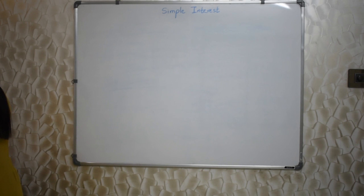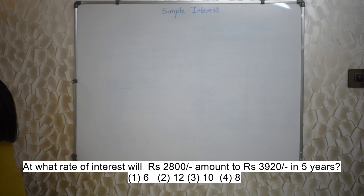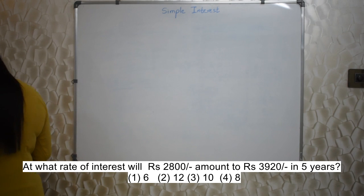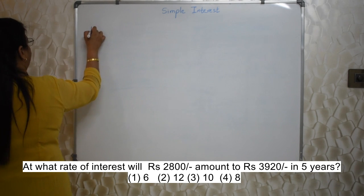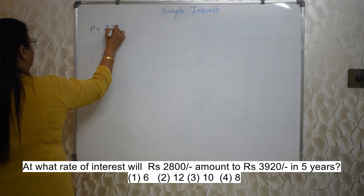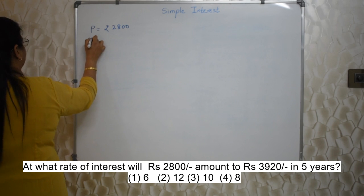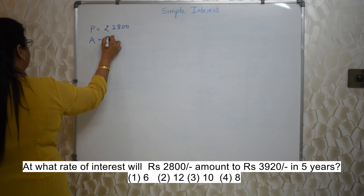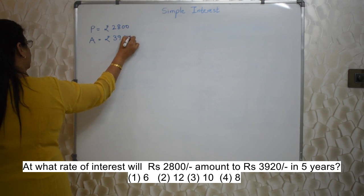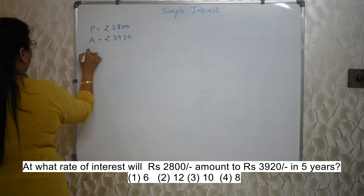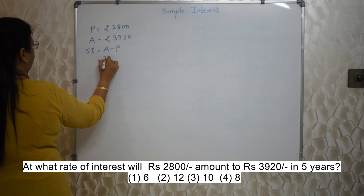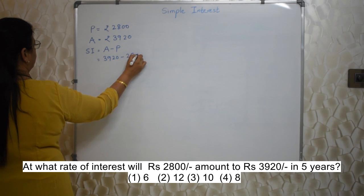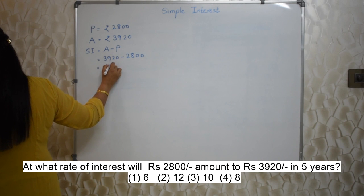Next sum: At what rate of interest will ₹2,800 amount to ₹3,920 in 5 years? Our first job is to find out what is given. The initial amount, that is Principal P = ₹2,800. It amounts to — that is the Amount, not interest, please be careful — A = ₹3,920. To find out the Simple Interest: SI = A − P = 3920 − 2800 = ₹1,120.